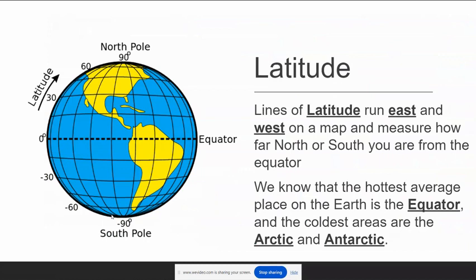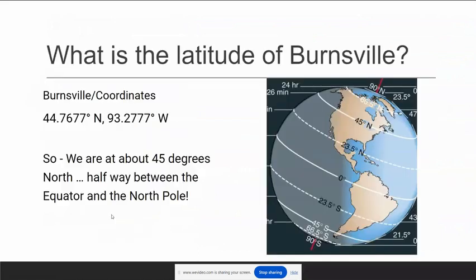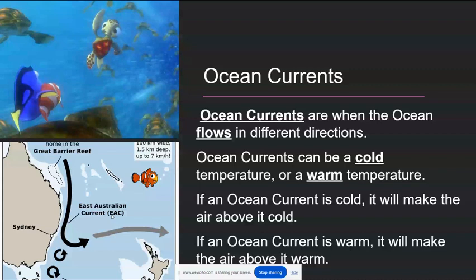Latitude is the distance from the equator — it's a location on our Earth. The higher your latitude, all other factors being equal, the cooler your temperature would be. So the equator tends to be the warmest part of the Earth, and as you move toward the poles it tends to get colder. Our latitude is right at about 45 degrees north, so we're about halfway between the equator and the North Pole.